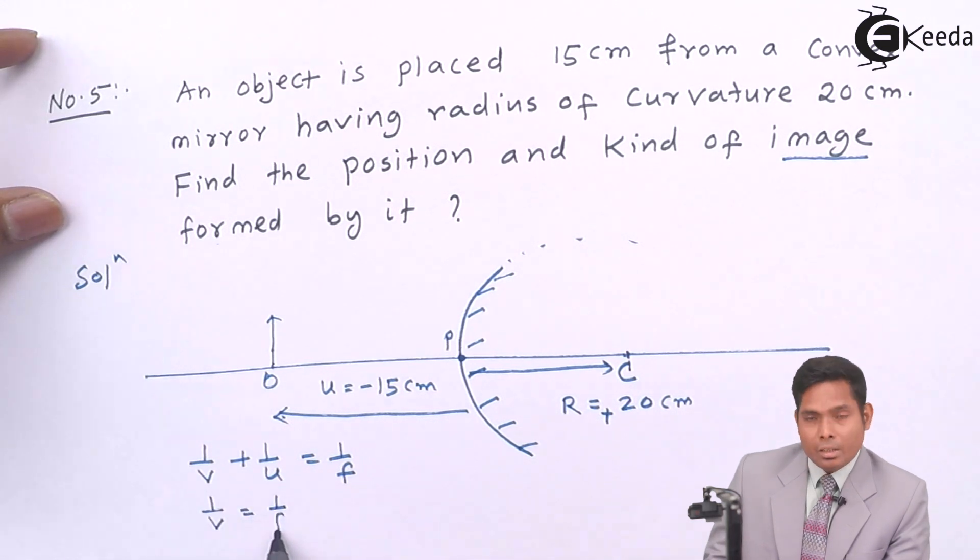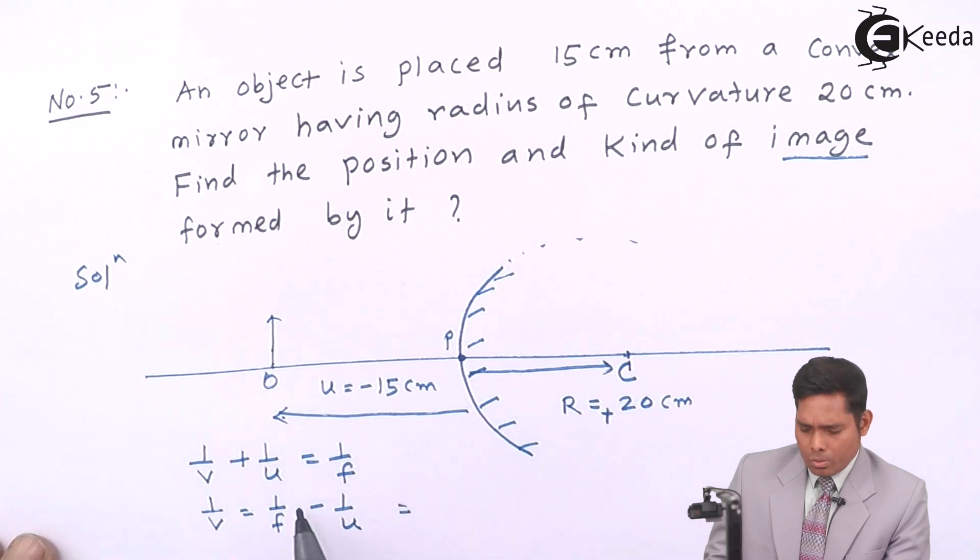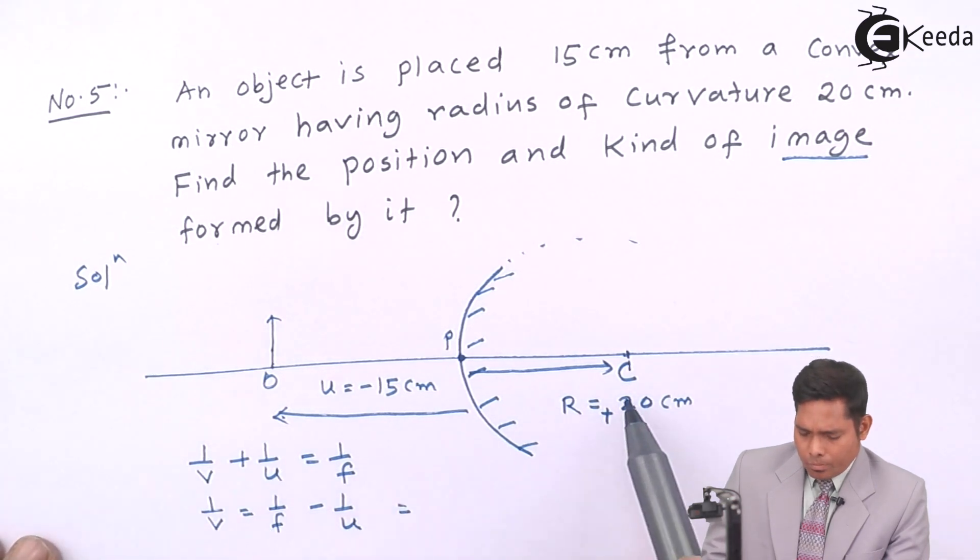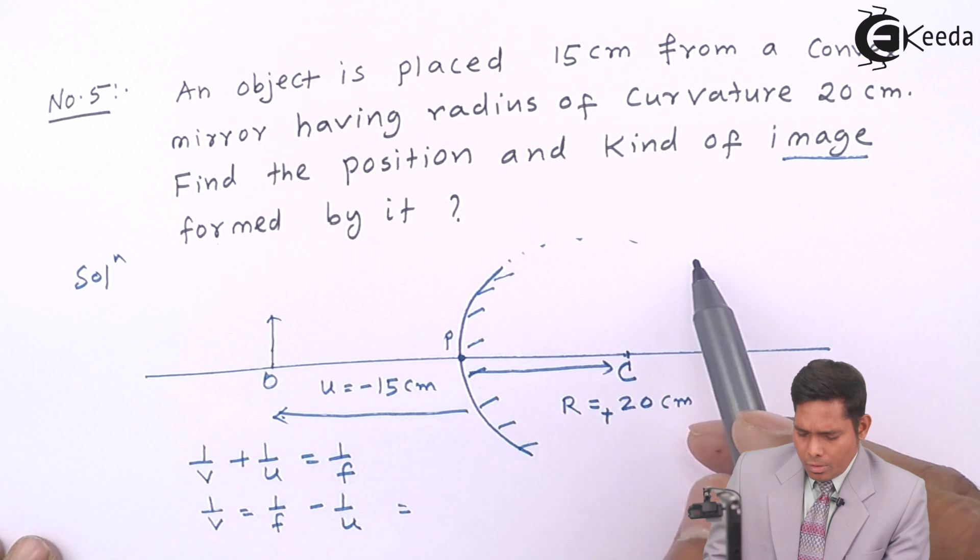v should not be given any sign because we do not know where the image is going to be formed. Now, 1/v = 1/f - 1/u.